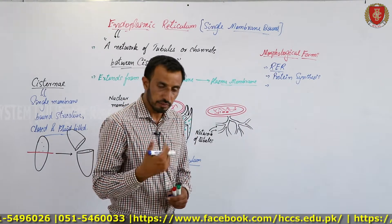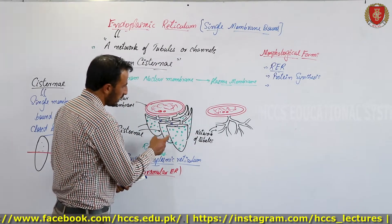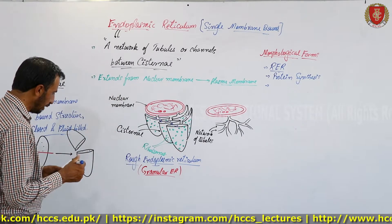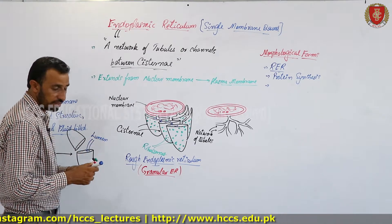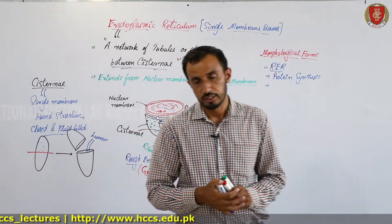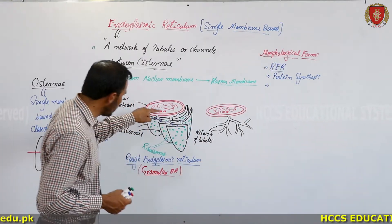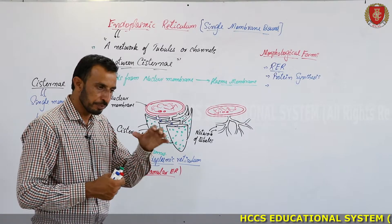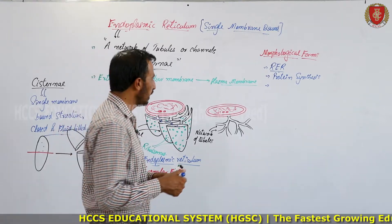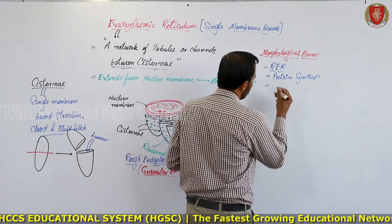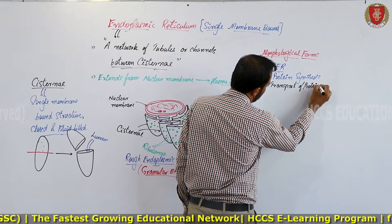Because ribosomes are present on the Rough ER, protein synthesis occurs there. The synthesized protein then moves into the lumen — the inner space — of the cisterna. This lumen is the inner space of the cisterna where synthesized material is stored and transported.